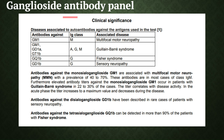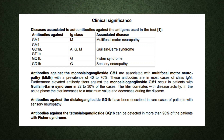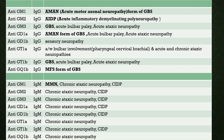Regarding clinical associations: GM1 IgM antibody is associated with multifocal motor neuropathy. Anti-GM1, anti-GD1a, and anti-GT1b of IgG, IgA, and IgM classes are all associated with Guillain-Barré syndrome. Anti-GQ1b is associated with Fisher syndrome, which is part of Guillain-Barré syndrome. GD1b IgG antibody is associated with sensory neuropathy. A detailed chart shows the evaluation of both IgG and IgM antibody positivity.